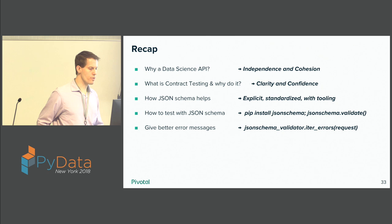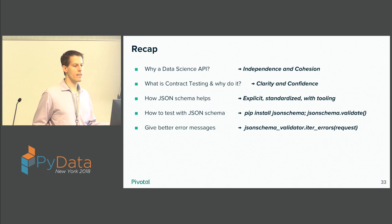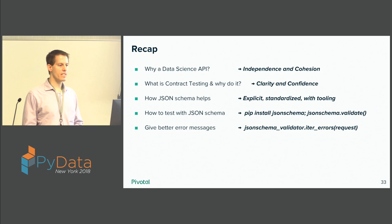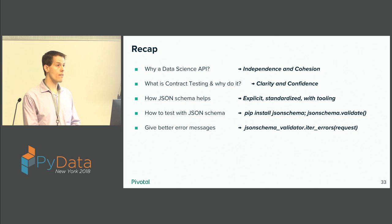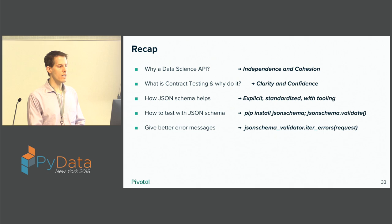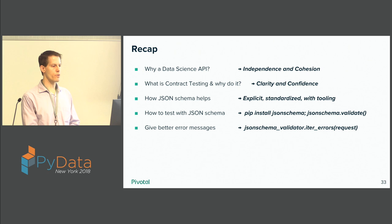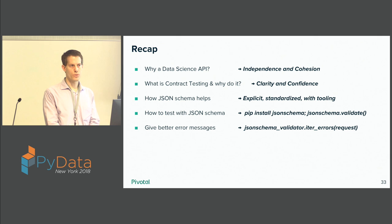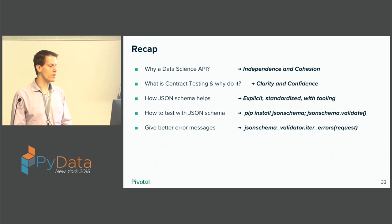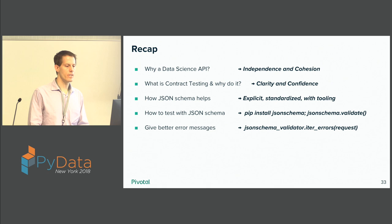To recap: approaching this collaboration with the application development side was really helped by having a data science API — it helped us be simultaneously independent but also staying in lockstep and being cohesive. Contract testing is a way to actually ensure that and give you clarity and confidence. In particular, I found JSON schema to be a pretty lightweight way for a data scientist to achieve all this without going too far off the deep end into all the other fancy stuff that software developers do. Because it's explicit, it's standardized, and there's tooling around it. To test with it, it's as simple as installing it and the .validate method. And as I mentioned, you can iterate through all the errors and give really good error messages to be as useful a part of that collaboration as you can.